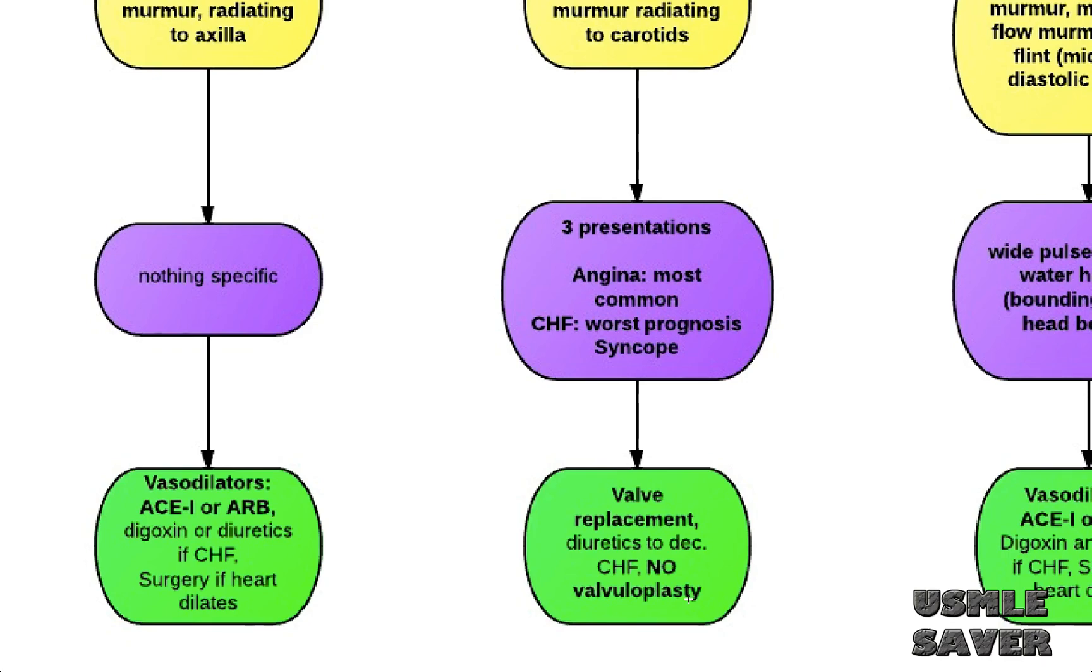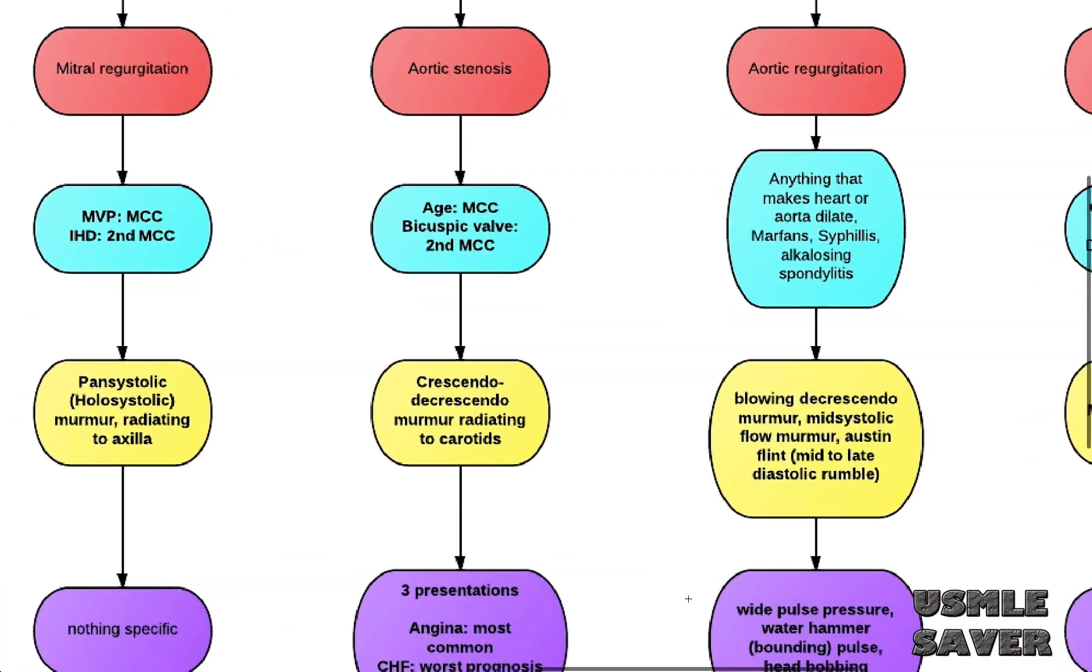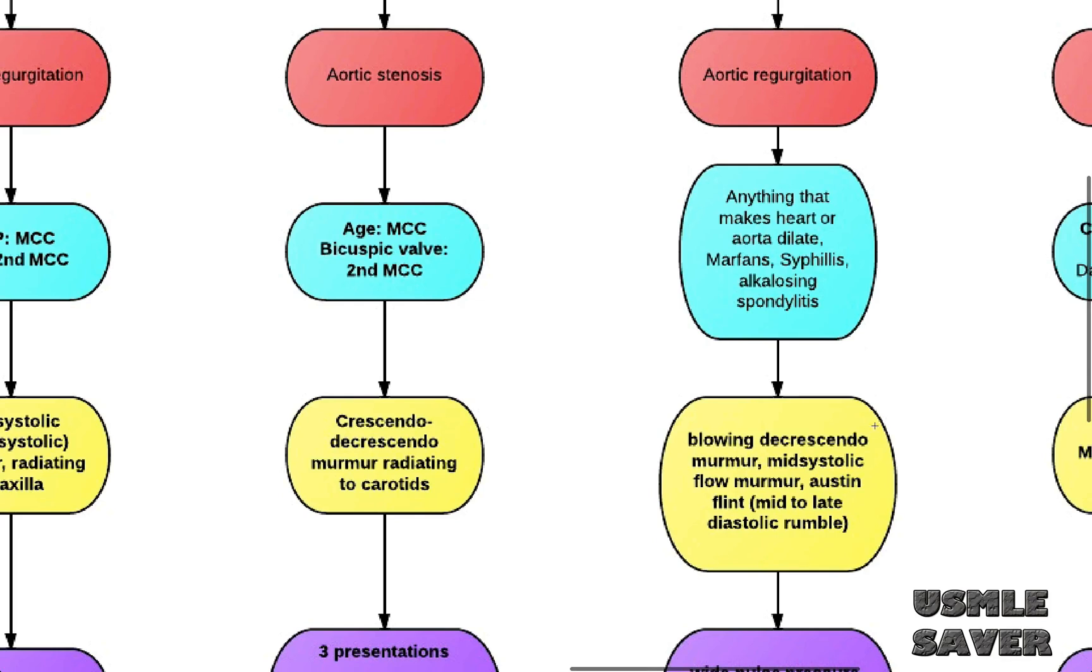Now let's move on to aortic regurgitation. Here, you want to remember that this is due to anything that makes the heart or aorta dilate. You also want to remember that aortic regurgitation is associated with Marfan syndrome, syphilis, and ankylosing spondylitis.